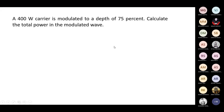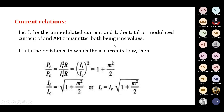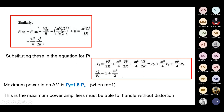We know this relation: Pt by Pc equal to 1 plus M square by 2. Note this relation — Pt by Pc equal to 1 plus M square by 2. So you can substitute for the carrier power and the modulation index and find out the total power, which is 12.5 watt.